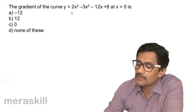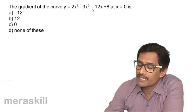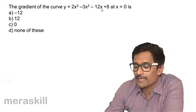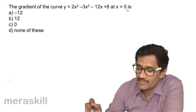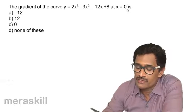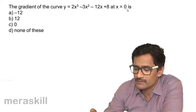The gradient of the curve y = 2x³ - 3x² - 12x + 8 at x = 0 is -12.